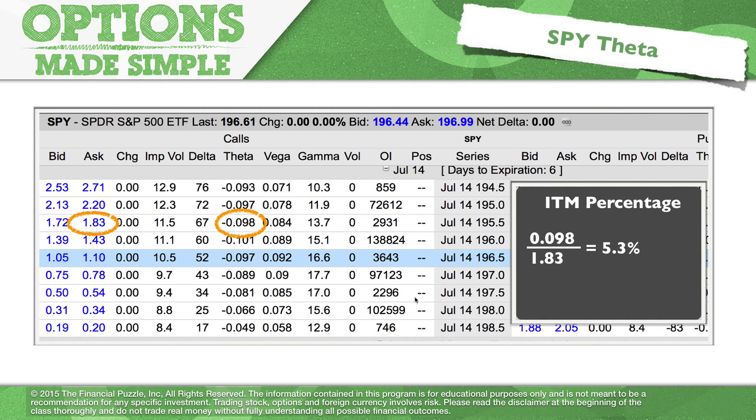Now, let's do one more example. Let's go one deeper in the money. We're now down to, it's actually a 195.50. So, we're only 50 cents more in the money. Look at this.